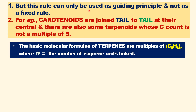This rule is not a hard and fast rule — it is not a fixed rule. It is only a guiding principle, because carotenoids and some terpenoids are joined by tail-to-tail at the central portion. There are also some terpenoids whose carbon count is not a multiple of five. So the isoprene rule is only a guiding principle, not a fixed rule, because of the exceptions found.